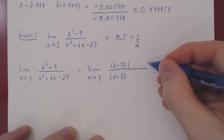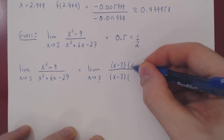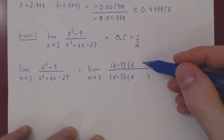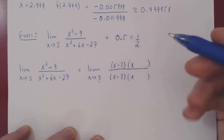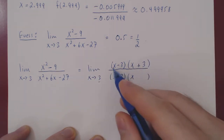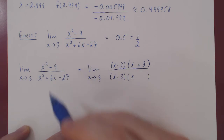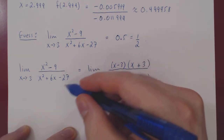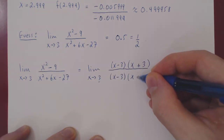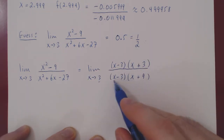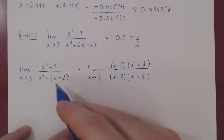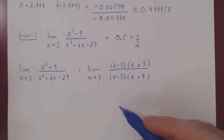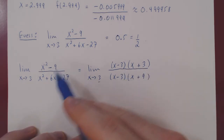As these are simple quadratic polynomials, the remaining factor in each case is very easy to find. For the numerator: what times negative 3 gives negative 9? Clearly positive 3. So x squared minus 9 factors as (x minus 3)(x plus 3). For the denominator: what times negative 3 gives negative 27? Positive 9. Check: x squared plus 9x minus 3x gives plus 6x, and negative 3 times 9 gives negative 27. So this is a proper factorization of both quadratic polynomials.